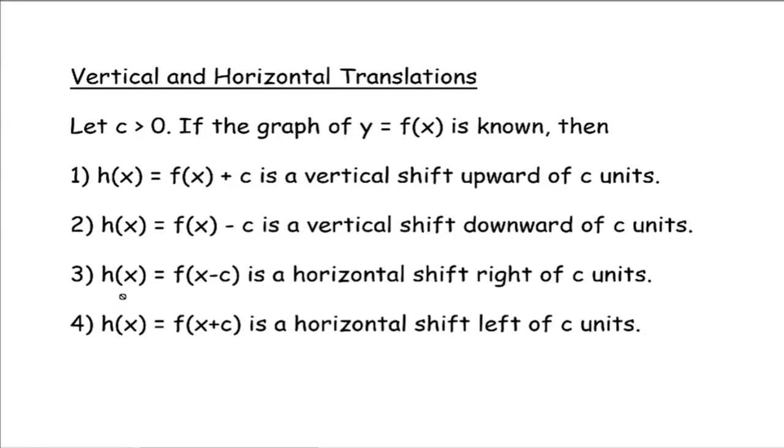All right, and then number 3 here, notice the difference between f(x) minus c and f(x minus c). The x minus c here is inside our original function. We're evaluating our function at x minus c, whereas here we're just subtracting c from our original f(x). So this situation is going to be a horizontal shift to the right of c units, and then f(x plus c) is a horizontal shift left of c units. Okay?